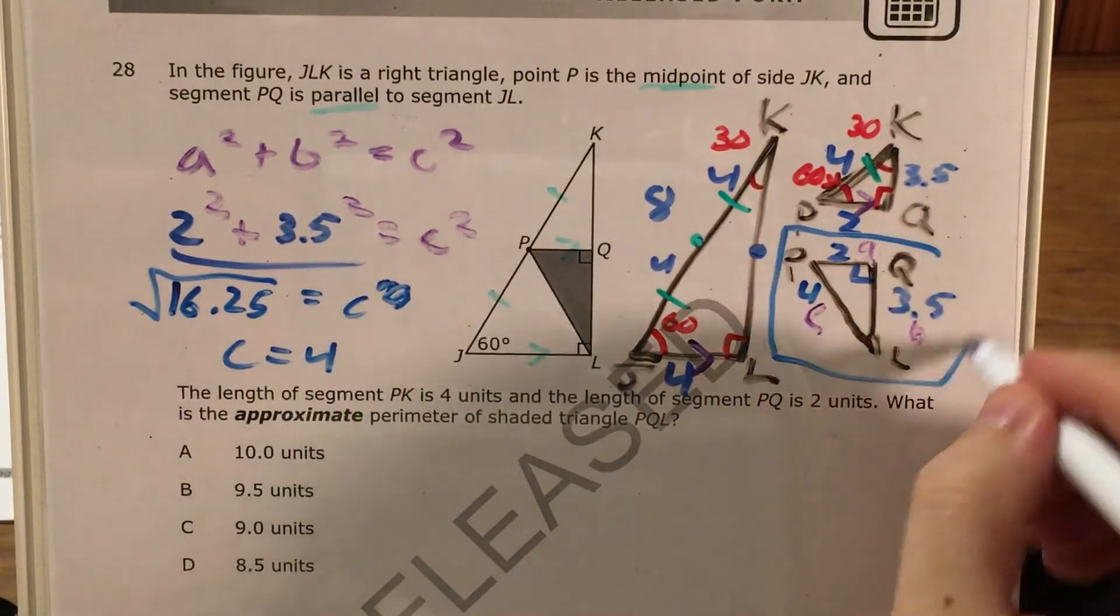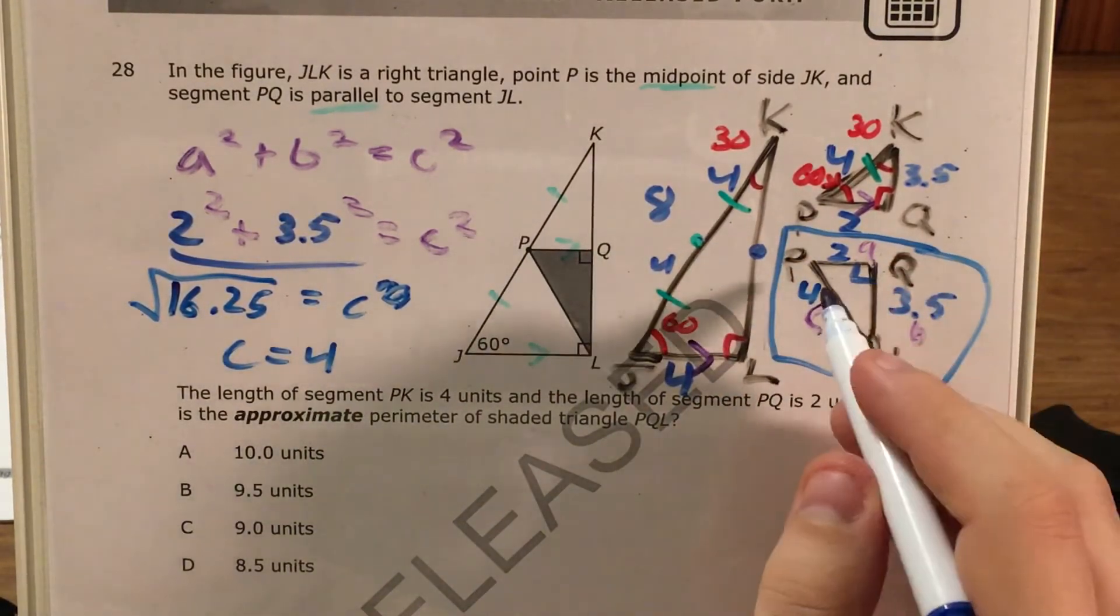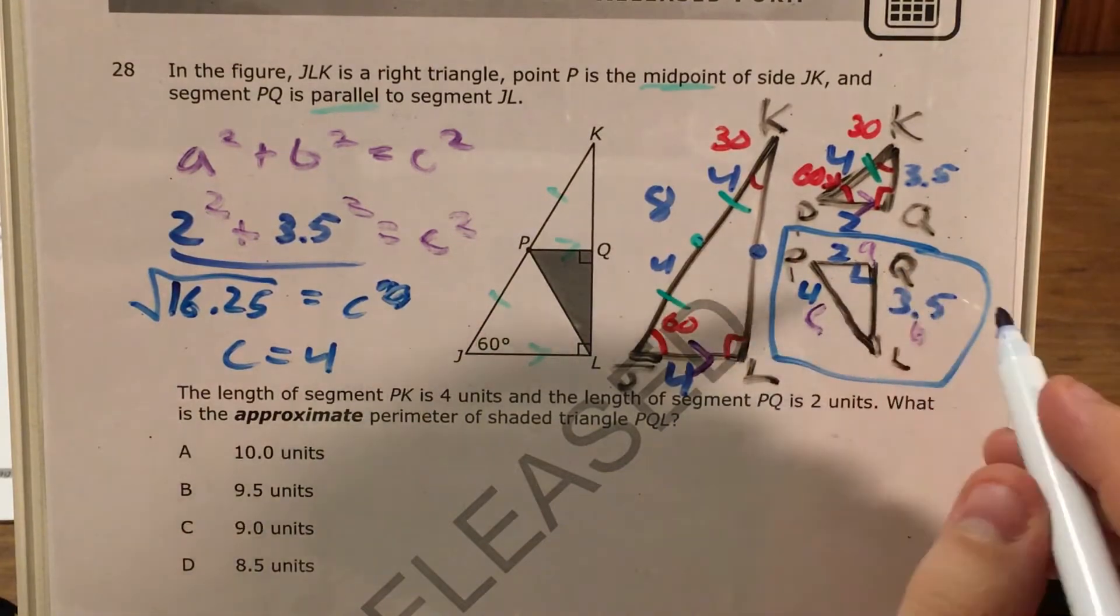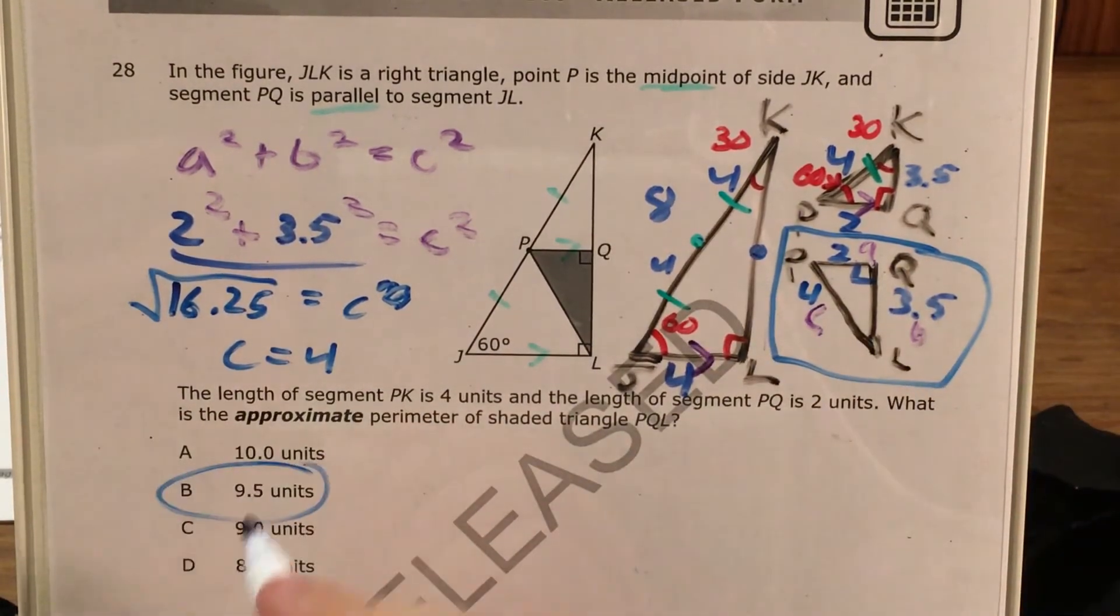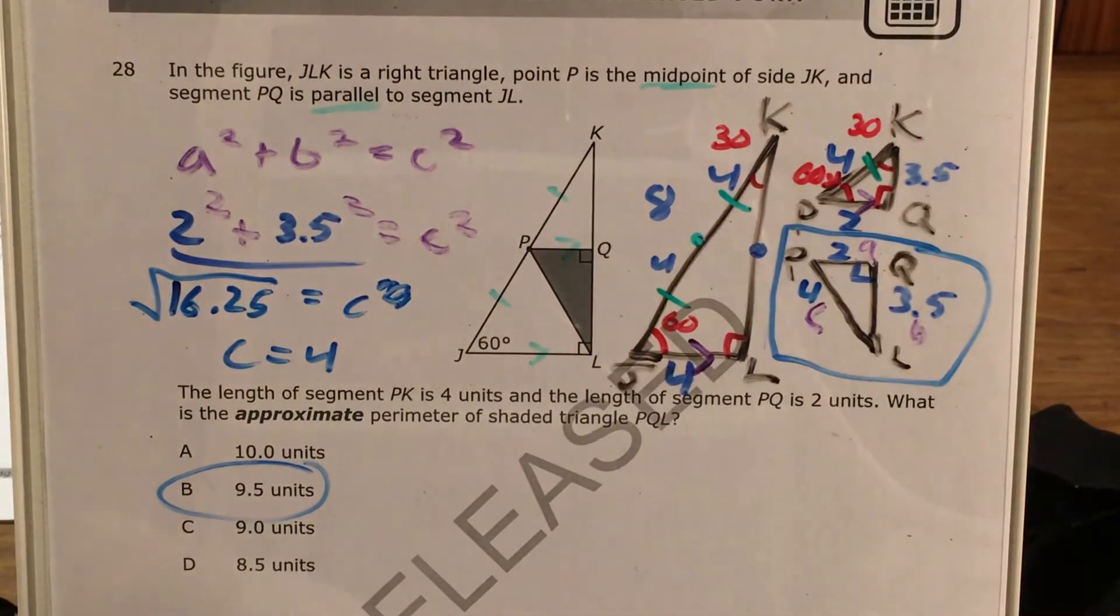And now, if we're just going to look at this triangle, we need to find its perimeter. So that's 4 plus 2 plus 3 and a half, which is about 9 and a half. So after all that work, all that ridiculous geometry stuff, our answer is b, 9 and a half units.